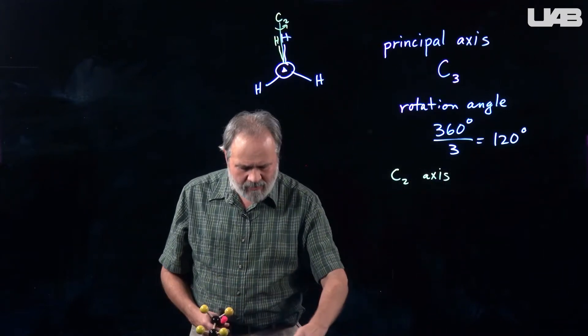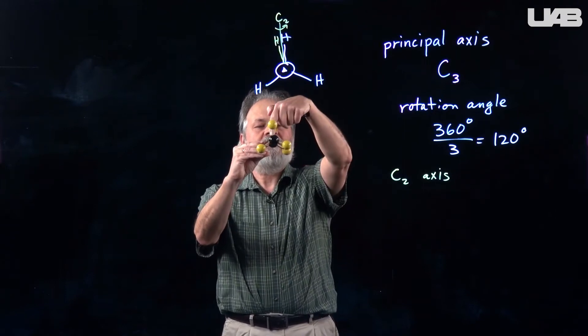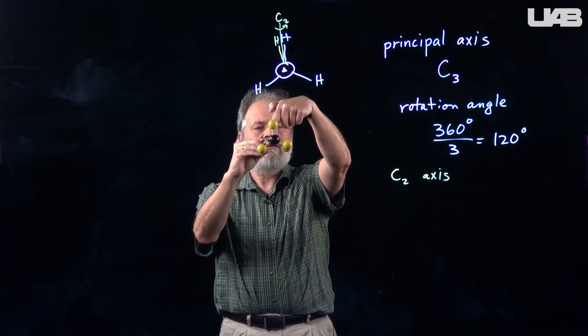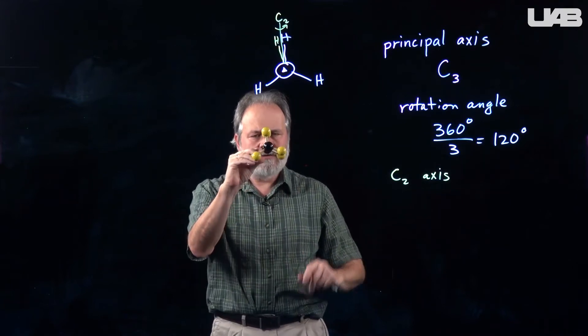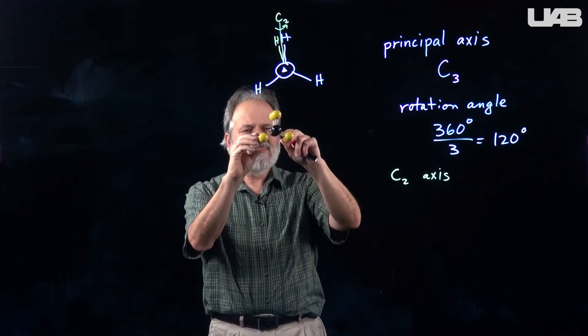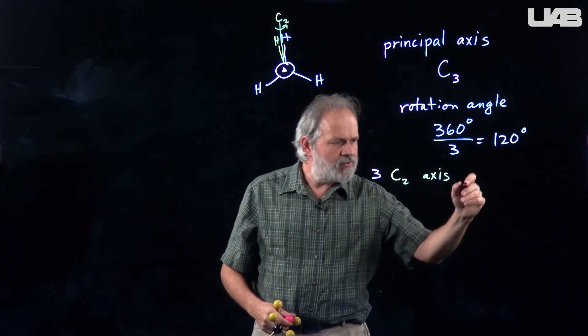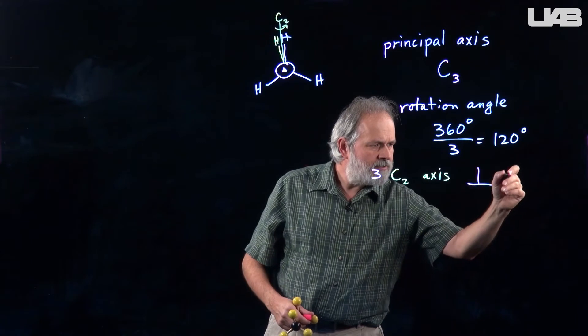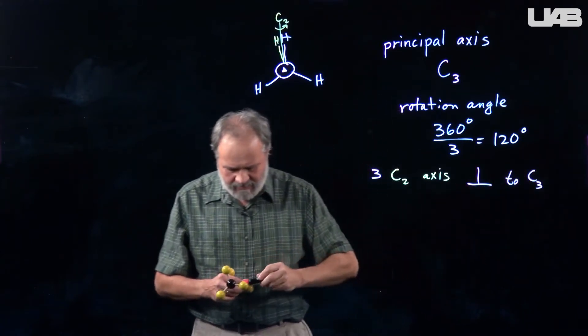However, the flow chart has a rather complicated bunch of words. It says, if you can find one C2 that's perpendicular to the original C3, there must be two others that you can't see but you know they must be there. So there's going to be three C2 axes which are perpendicular to the C3, the principal axis.